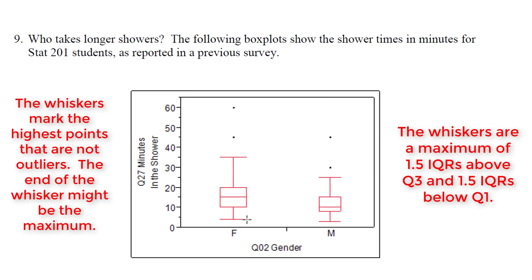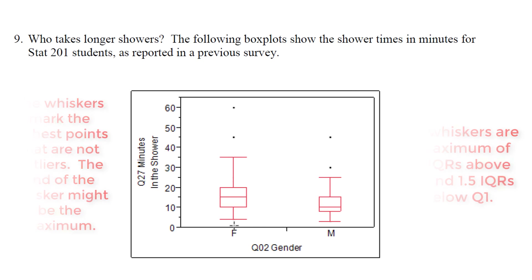You might ask why the whisker doesn't go as far in one direction — it's because there's no data there. The whisker will stop when there's no data. It can go as far as 1.5 IQRs above Q3 and as far as 1.5 IQRs below Q1, but it won't go beyond where there is any data.